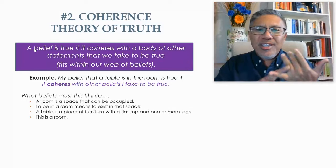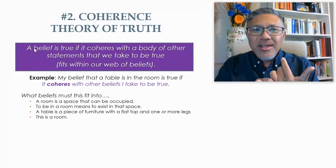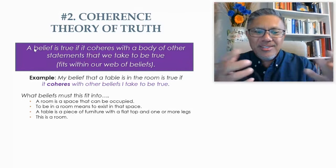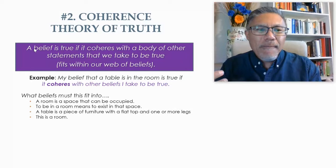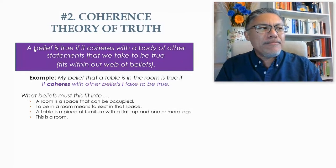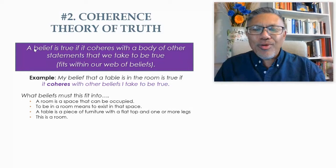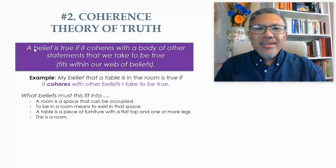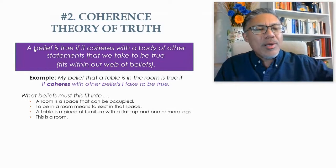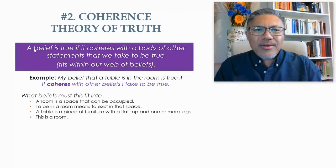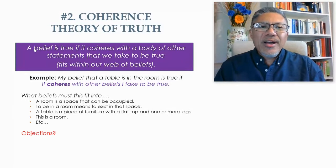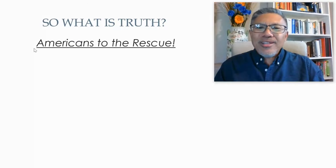So what else can truth be? We can't say truth is how the world is because we don't know how the world is. We can't say truth is what fits in with all your other beliefs. Then what else can truth be? Think about the philosophers we've looked at in class so far — most of them are primarily from Europe. We've been debating truth and we kind of get stuck. Well, guess what — Americans come to the rescue.